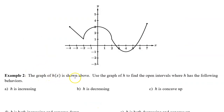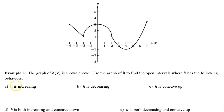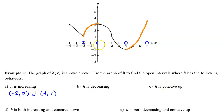Example 2: the graph of h(x) is shown. Use the graph to find open intervals where h has the following behaviors. Part a: where is h increasing? h is rising left to right on two intervals. h is increasing on the open interval from negative 2 to 0, union 4 to 7. We use open circles and parentheses in interval notation to show that endpoints are not included.